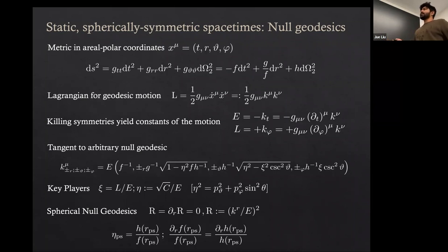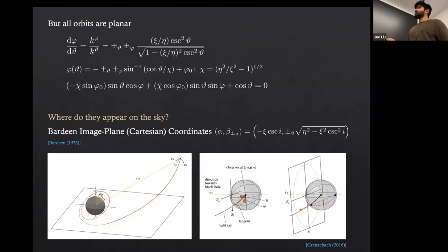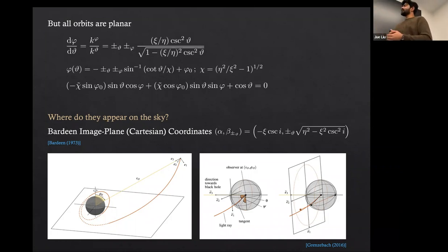We look for locations where spherical null geodesics exist — where r-dot and r-double-dot equal zero — constant r surfaces. In spherical symmetry, all orbits are planar, so these are actually circular null geodesics, corresponding to a region of extremely strong gravitational lensing. If you stand at that spot and shine a torch from the back of your head, the light lenses all the way back to you. This surface is called the photon sphere, where photons move on spatially circular orbits.